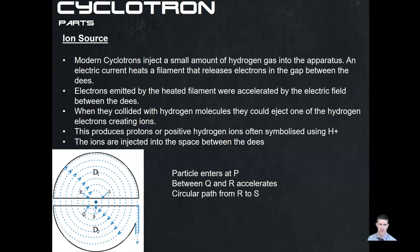Modern cyclotrons inject a small amount of hydrogen gas into the apparatus. An electric current heats a filament that releases electrons in the gap between the d's. These electrons emitted by the heated filament are accelerated by the electric field between the d's. When they collide with the hydrogen molecules that are injected, they eject one of the hydrogen electrons. So we're generating electrons in the filament, injecting hydrogen gas, accelerating the electrons through the field, and then smashing them into each other — similar in concept to the hadron collider but on a very small scale — just enough to eject an electron and generate a hydrogen ion.